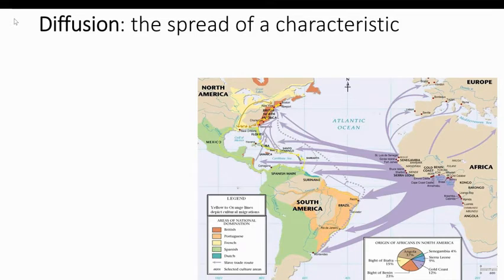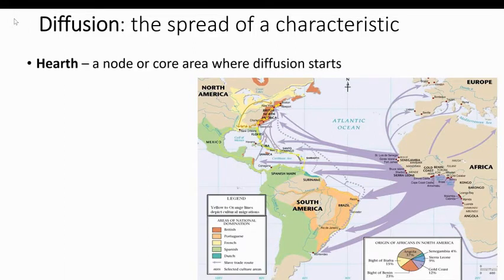Diffusion is the spread of some sort of characteristic — usually that characteristic is an idea. It could be something as simple as a slang word or a better way of doing something. Diffusion usually starts at a specific place. When it involves relocation diffusion, we need to talk about its hearth — where did it come from?